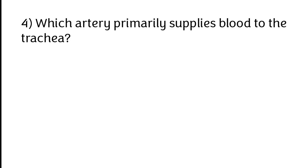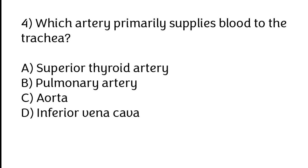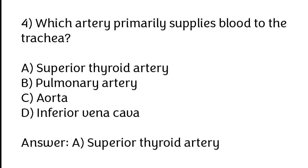Which artery primarily supplies blood to the trachea? Options: A) Superior thyroid artery, B) Pulmonary artery, C) Aorta, D) Inferior vena cava. The correct answer is option A, superior thyroid artery.